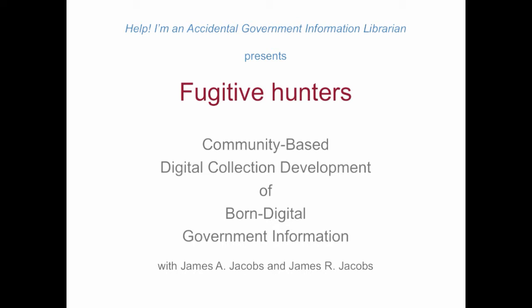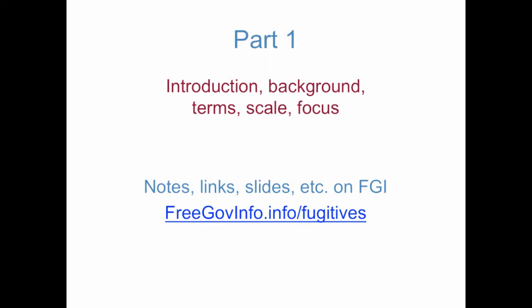I'll be presenting, introducing today's topics and giving some ideas, background, scope, and even a little bit of history. James will be going into some of the technical details about how any library, large or small, even with limited resources, can do actual digital collection development of fugitives. We're putting our slides and notes and links all on the FGI website at freegovinfo.info/fugitives. If you go there after the webinar, we'll make that page live, and that way you won't have to write down any links that we give during the presentation.